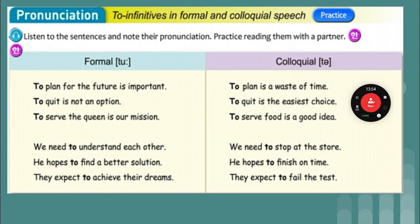Pronunciation: infinitives in formal and colloquial speech. In formal speech, you fully pronounce 'to': 'To plan for the future is important.' 'To quit is not an option.' 'To serve the queen is our mission.' You're speaking to people from a position of authority. In colloquial speech, it sounds like a reduced 'to': 'To plan is a waste of time.' 'To quit is the easiest choice.' Formal again: 'We need to understand each other.' 'He hopes to find a better solution.' 'They expect to achieve their dreams.' You pronounce the full 'to' when being formal. When you're colloquial — just talking with friends — you say a reduced 'to': 'We need to stop at the store.' 'He hopes to finish on time.' 'They expect to fail the test.' Let's keep going.